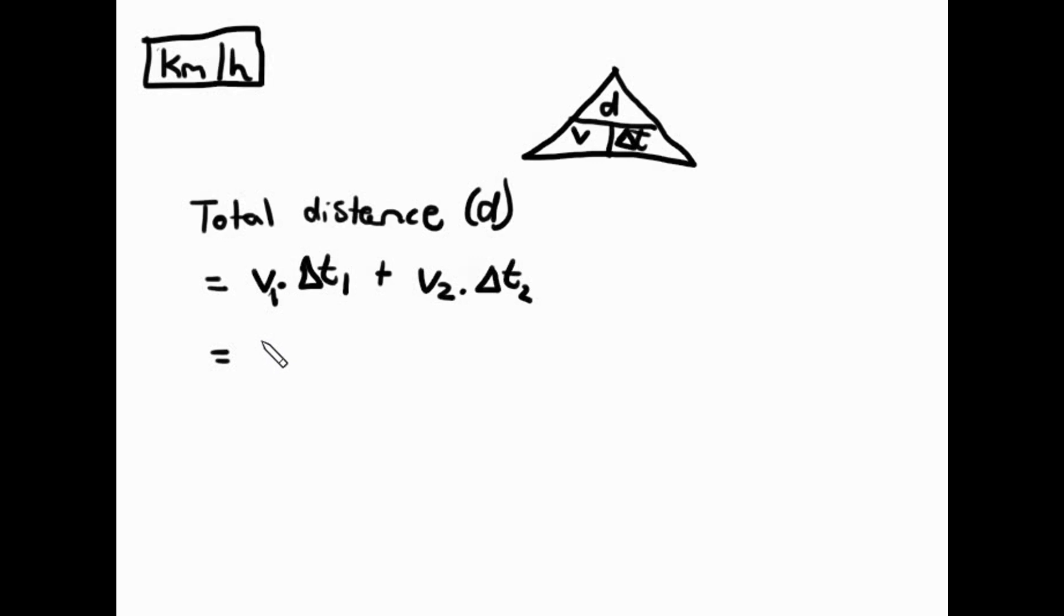That equals to, remember, 40 kilometers per hour, the first one, and a half an hour. There we go. That's our first one. Plus, 60 kilometers per hour for the next hour. Times by 1. Plus, then, 90 kilometers per hour for the next half an hour. So, 90 times by 0.5. Then, let's equate that. I would get an answer of 20 plus 60 plus 45. And our total distance is equal to 125 kilometers.